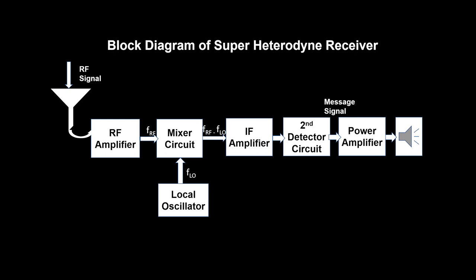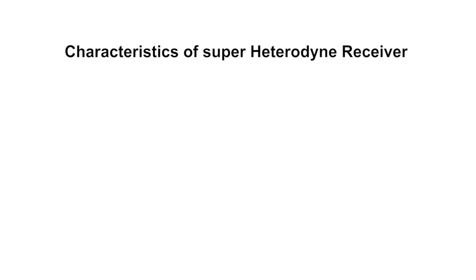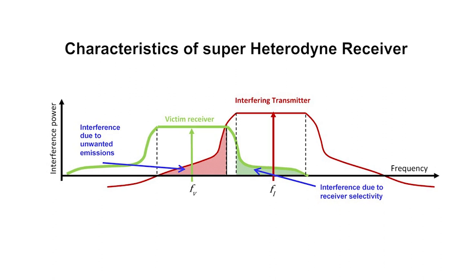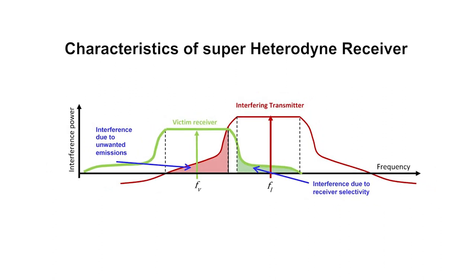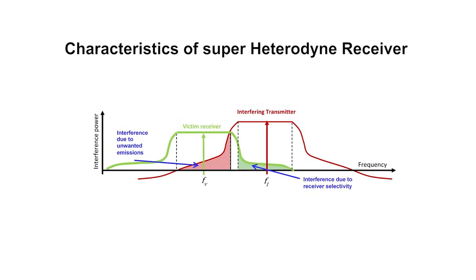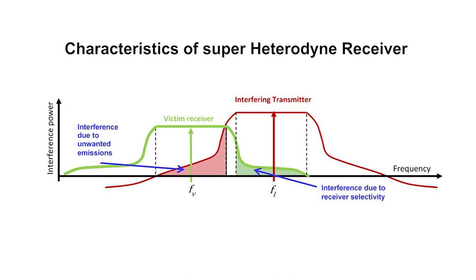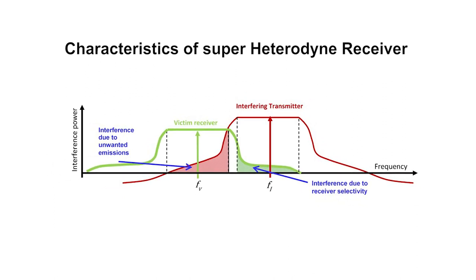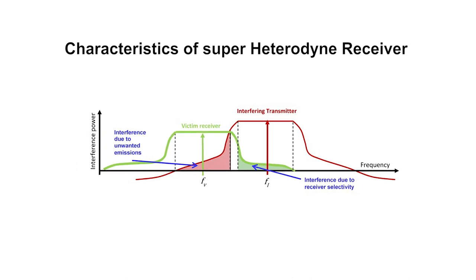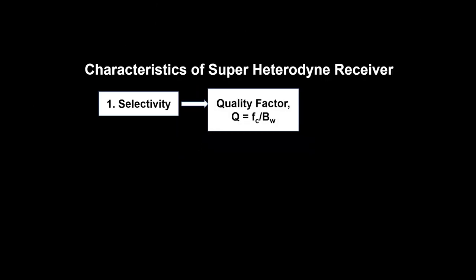This message signal is transferred to the power amplifier, and after amplification by the power amplifier, the message signal is transferred to the speaker. Let us now discuss characteristics of a receiver. First, selectivity — it is the ability of a receiver to select the desired signal and reject unwanted signals. To quantify the selectivity of a receiver, there is a parameter called quality factor, denoted by Q. Quality factor Q is equal to F_C divided by BW, where F_C is the central frequency and BW is the bandwidth.